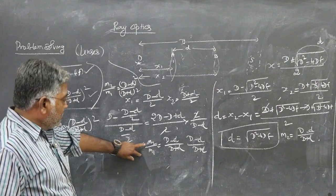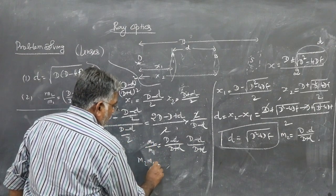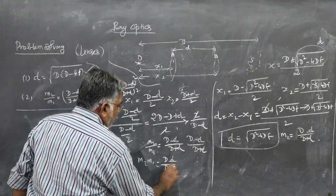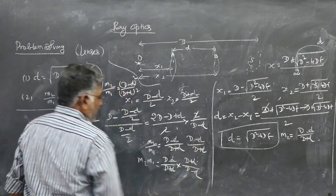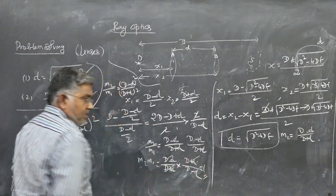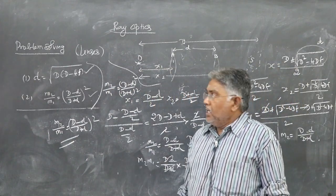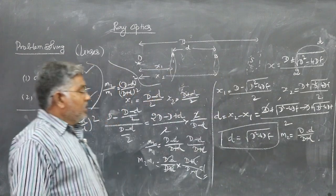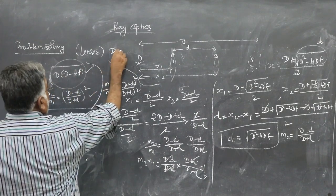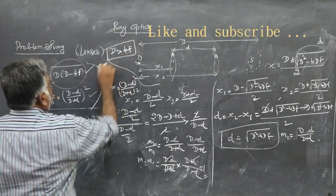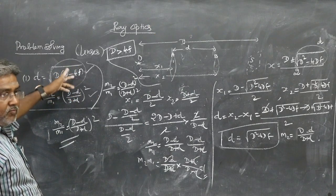Additionally, if you are asked to find m1 times m2: m1 times m2 equals (D plus d)/(D minus d) times (D minus d)/(D plus d), which cancels to give m1 times m2 equals 1. One more important thing to note: since small d equals √(D² minus 4Df), for everything to work out there must be a non-negative value inside the square root. Therefore D must be greater than 4f; otherwise there would be a negative value inside the square root, which is not possible.